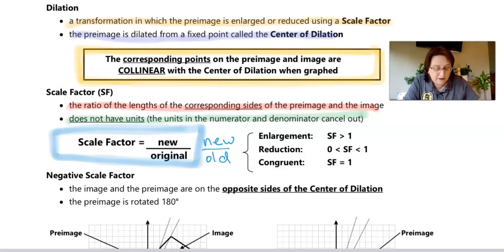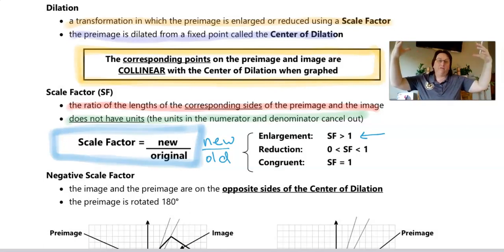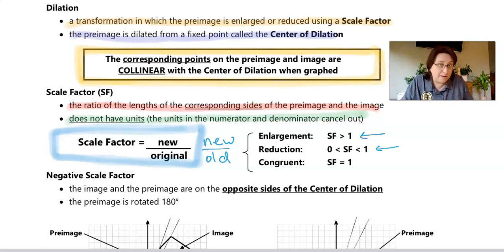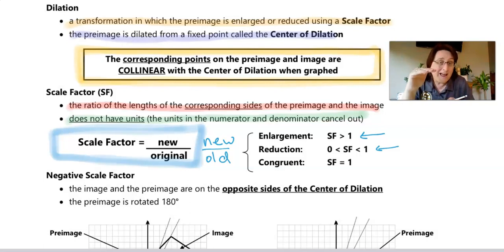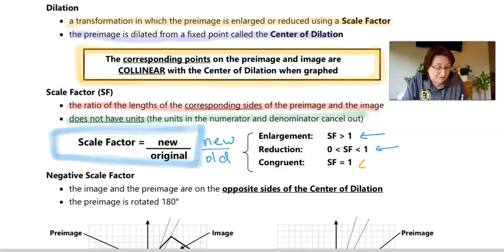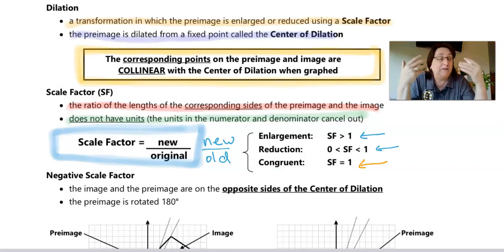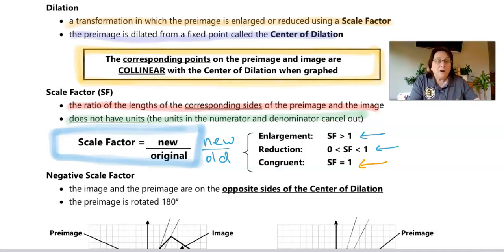When your scale factor is greater than one, you have an enlargement - something gets bigger. If your scale factor is between zero and one, it's a reduction - like he is half the size that I am. When your scale factor equals one, the two objects are congruent - the size didn't change, it didn't get bigger or smaller, it stayed the same.